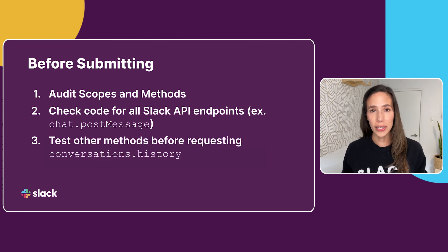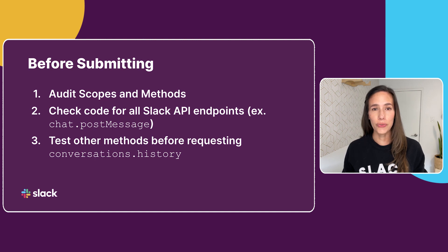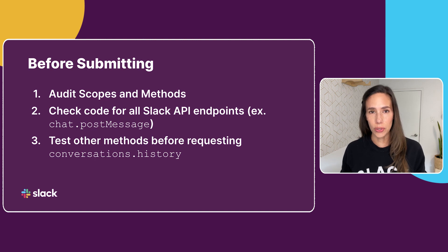Another thing to note is history scopes. They tend to be pretty broad and send out a lot of information. So before you request a history scope, make sure you've tested out all other possible alternatives. If you absolutely need to request a history scope, make sure you associate it to your bot token.